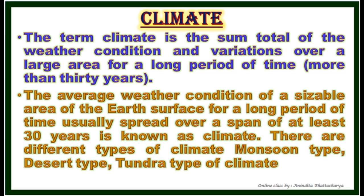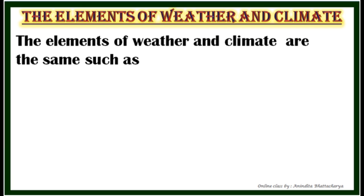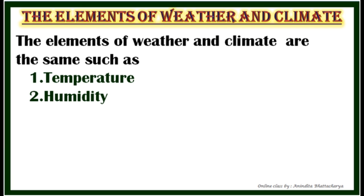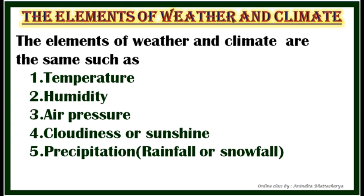There are different types of climate, such as monsoon type, desert type, and tundra type. The elements of weather and climate are the same: temperature, humidity, air pressure, cloudiness or sunshine, precipitation meaning rainfall or snowfall, and wind.